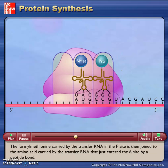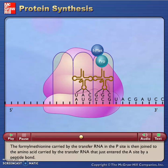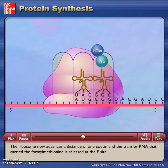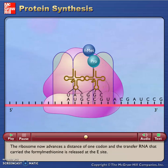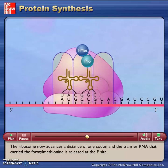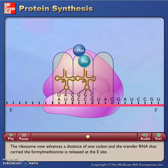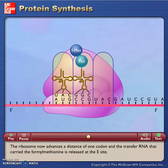The formyl methionine carried by the transfer RNA in the P-site is then joined to the amino acid carried by the transfer RNA that just entered the A-site by a peptide bond. The ribosome now advances a distance of one codon and the transfer RNA that carried the formyl methionine is released at the E-site.